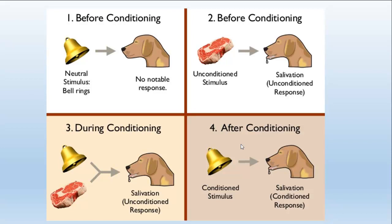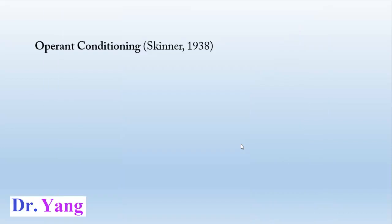The salivation is still unconditioned during this period. But after you repeat the same activity over a long time, eventually you don't have to present the meat — you just ring the bell and the dog will start to salivate. There is no meat involved in this response. So in this case, salivation is conditioned to the ring of the bell. The bell is the conditioned stimulus and salivation is the conditioned response.